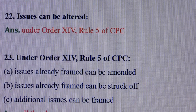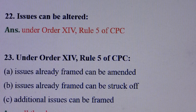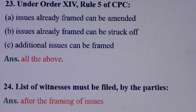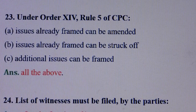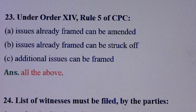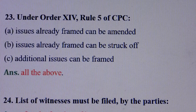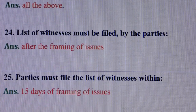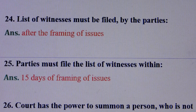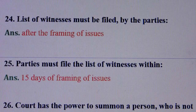Question number 22: Issues can be altered — answer is: under Order 14 Rule 5 of CPC. Question number 23: Under Order 14 Rule 5 of CPC — answer is: all of the above. That means: Option A — issues already framed can be amended; Option B — issues already framed can be struck off; Option C — additional issues can be framed. Question number 24: List of witnesses must be filed by the parties — answer is: after the framing of issues.